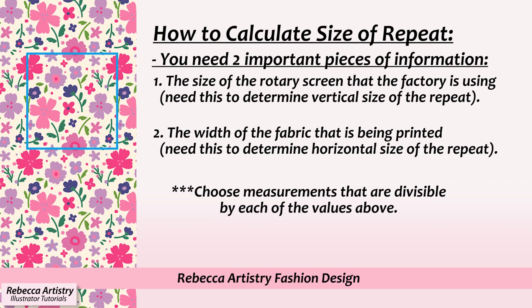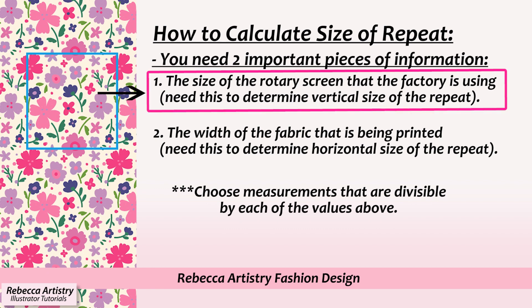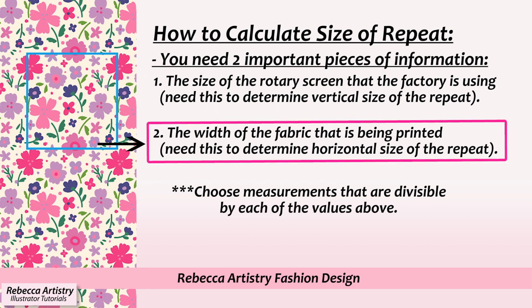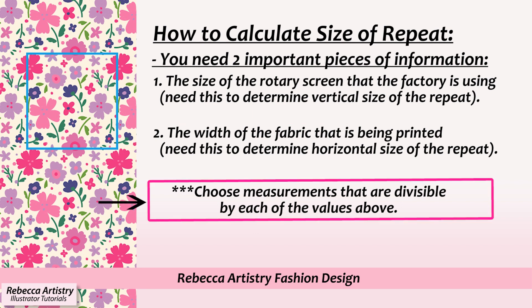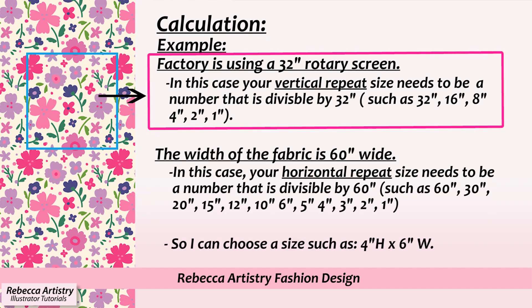You need two important pieces of information to figure it out. One: for the vertical size of the repeat, you need to know the vertical size of the screen that the factory is using. And two: for the horizontal size of the repeat, you need to know the width of the fabric being used. As a hypothetical example, let's say the factory uses a 32-inch rotary screen. In that case, vertically, your repeat should be a number divisible by 32 inches — such as 16 inches, 8 inches, 4 inches, etc. So I'm going to pick 4 inches for this example.